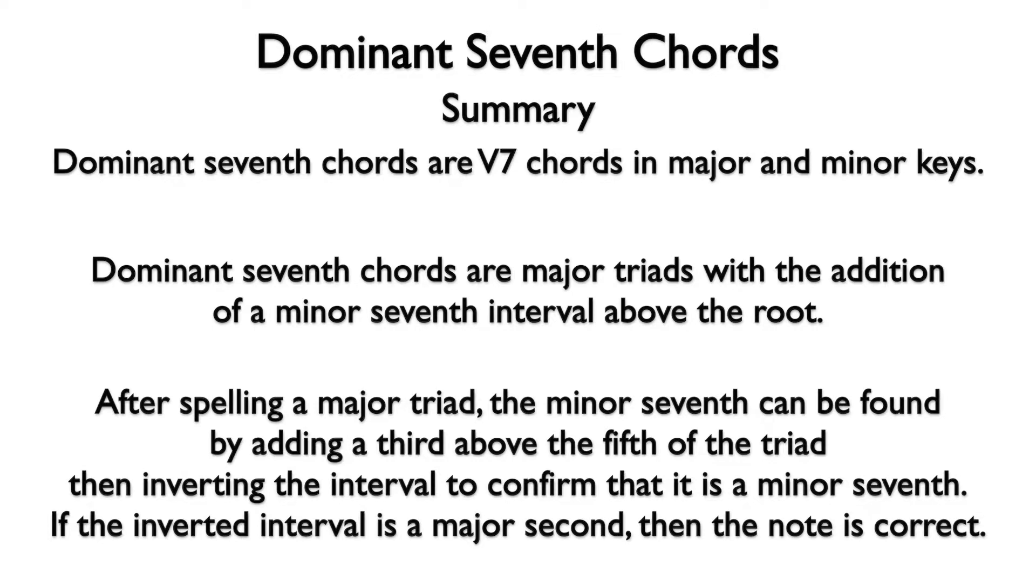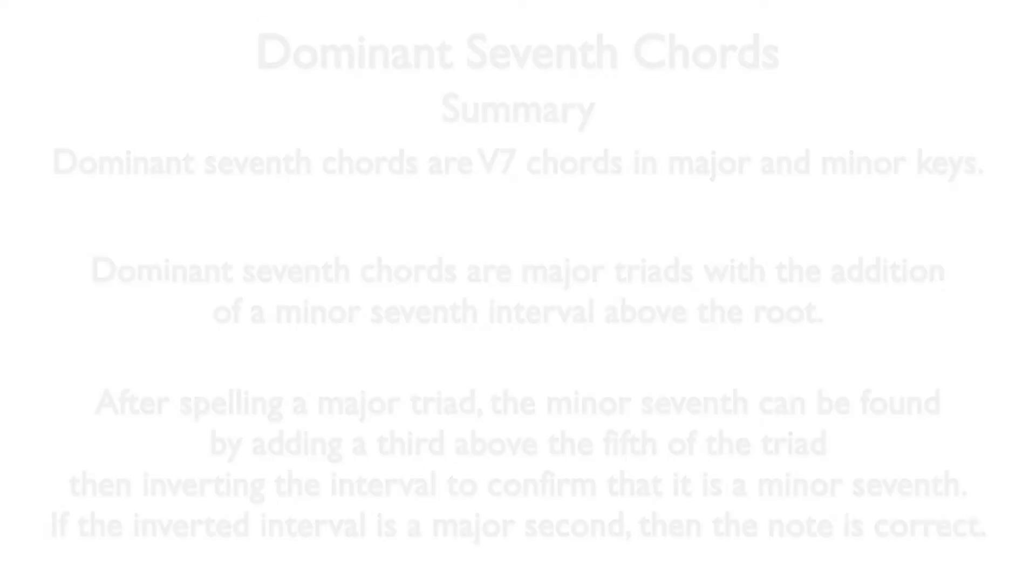After spelling a major triad, the minor seventh can be found by adding a third above the fifth of the triad, then inverting the interval to confirm that it is a minor seventh. If the inverted interval is a major second, then the note is correct.